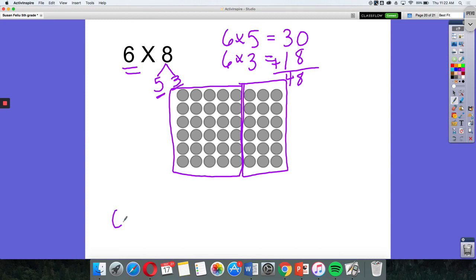So you could look at this as 6 times (3 plus 5), or you could look at it as (6 times 5) plus (6 times 3).